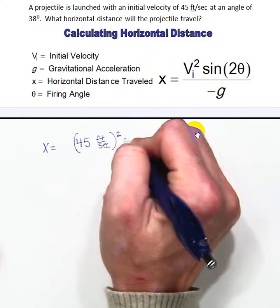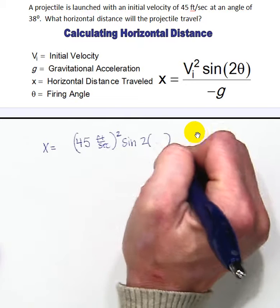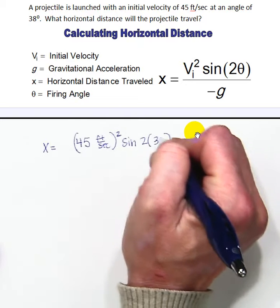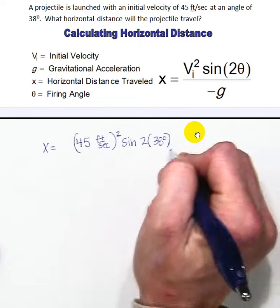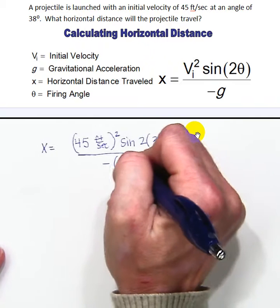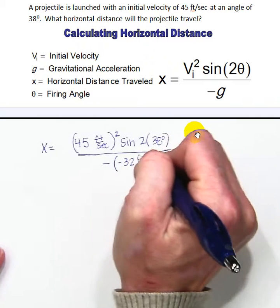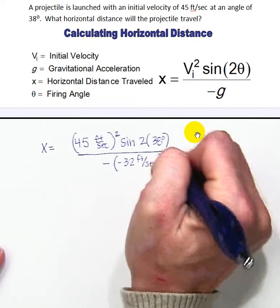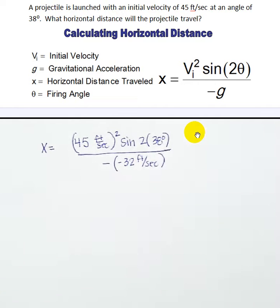Then the sine of 2 times my angle - the angle was 38 degrees - and we're going to divide by the opposite of my gravitational constant, which is negative 32 feet per second. And again, I'm using 32 because I'm in US units of measurement.